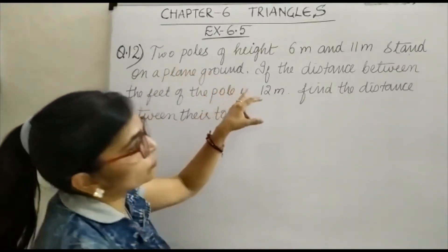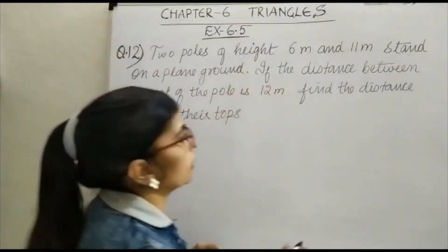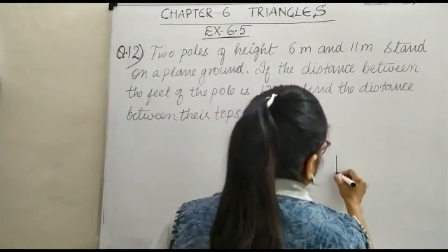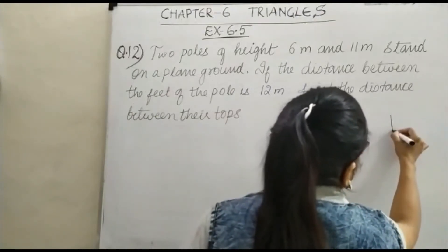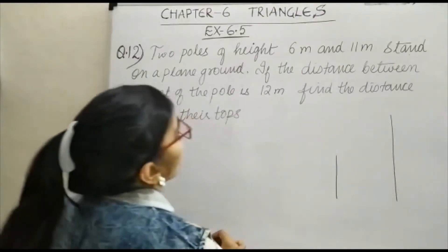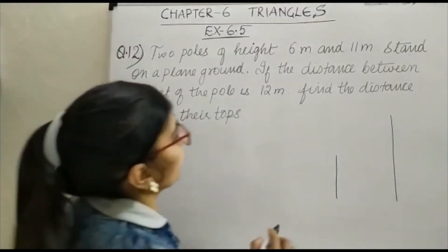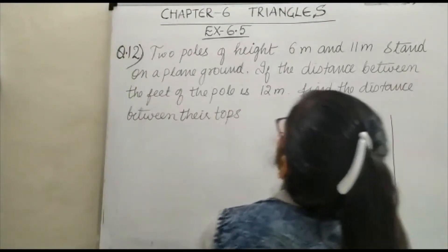It's given that two poles of height 6 meter and 11 meter. Suppose this is your 6 meter and this is your 11 meter. They stand on a plain ground.